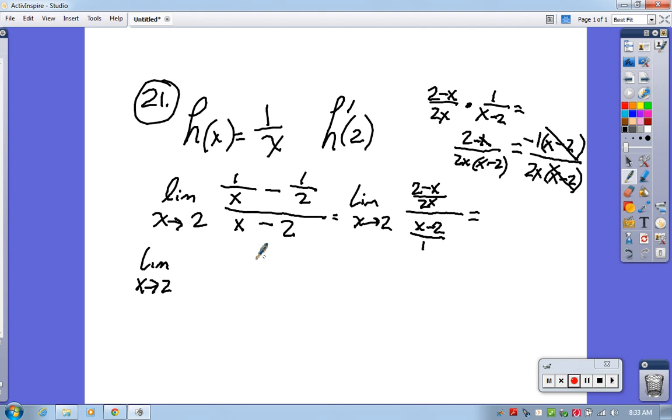This leaves me with the limit as x approaches 2 of -1/2x, just from that reducing, which is great because now I can just plug in 2. It would be -1 over 2 times 2, which is -1/4.